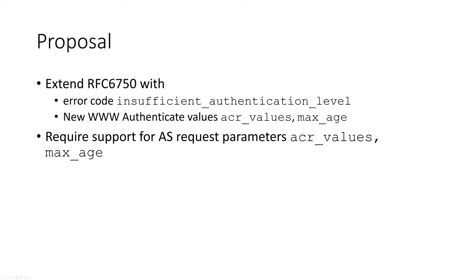The other thing we'd like to do is make it official for the authorization server to support the parameters ACR values and max_age, which OpenID Connect already introduced but we don't have on the OAuth side. The idea is: if you want to support this scenario, you don't necessarily need to bring the entire caravan of OpenID Connect implementation. If you do, you'll also have support for those. But if you are an authorization server that does OAuth and you want to do step-up, all you need is supporting those two particular parameters — they are not new per se, but they are new in the context of OAuth.